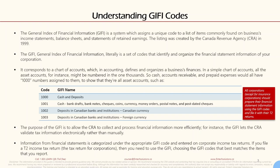Understanding GIFI codes: the General Index of Financial Information (GIFI) is a system which assigns a unique code to a list of items commonly found on businesses' income statements, balance sheets, and statement of retained earnings. The listing was created by the Canada Revenue Agency (CRA) in 1999. GIFI is literally a set of codes that identify and organize the financial statement information of your corporation.